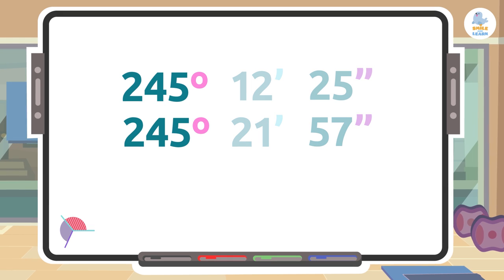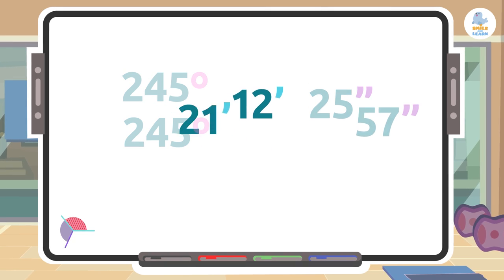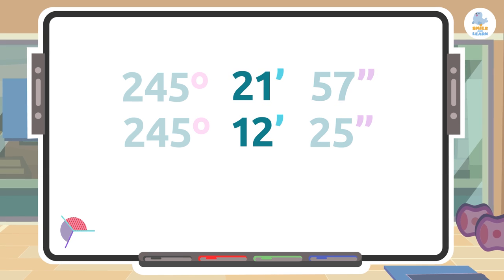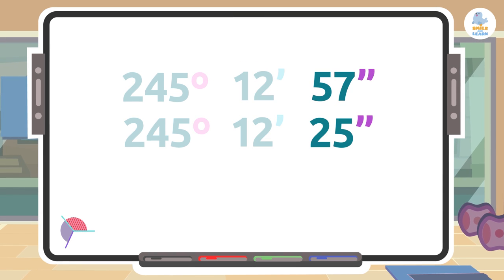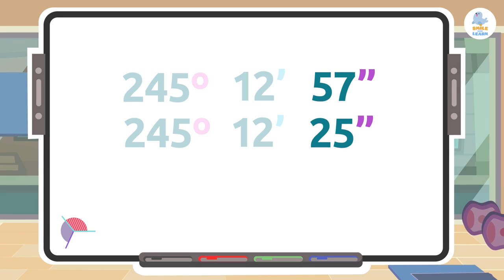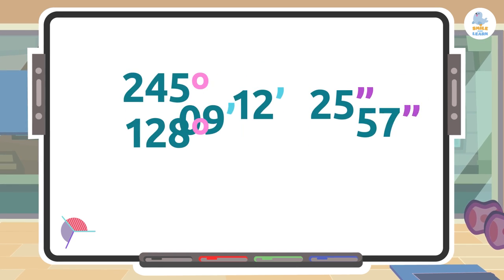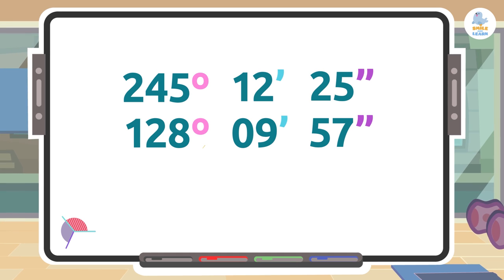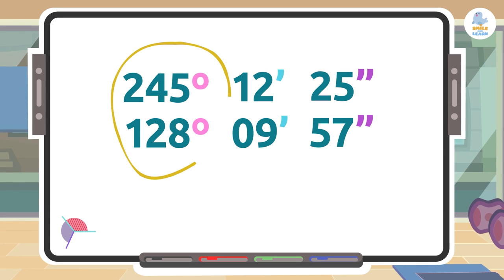If the degrees were the same, we would look at the minutes and the largest one would go on top. If they were the same as well, we would look at the seconds. Once we know which angle is larger, we have to place the degrees under the degrees, the minutes under the minutes, and the seconds under the seconds.